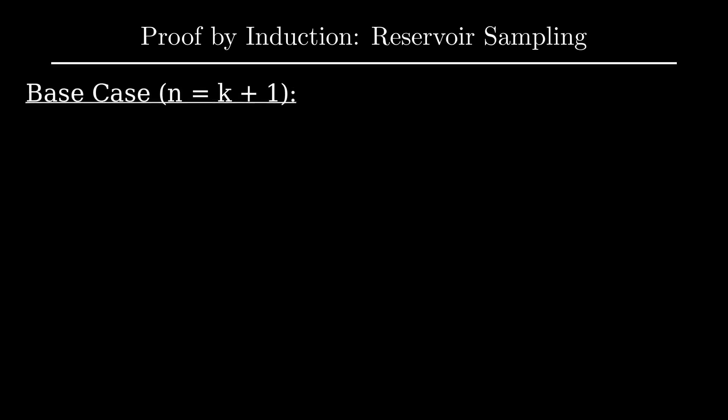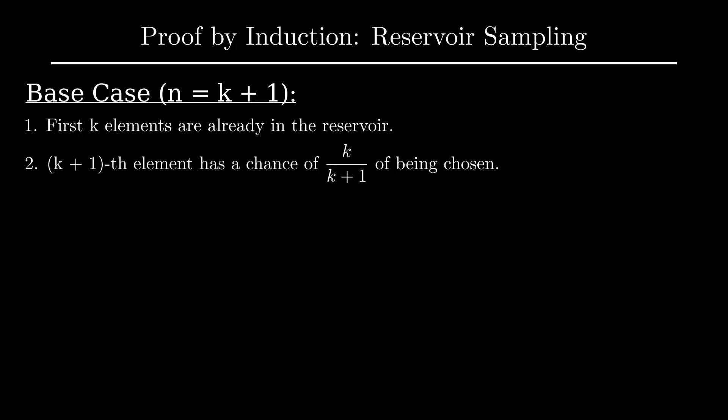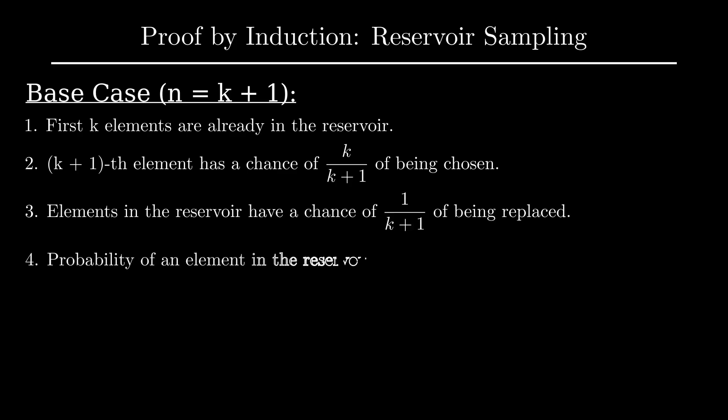The proof works by induction on n greater than k, so our base case is n equals k plus 1. The induction hypothesis is that all elements in the reservoir have the same probability of being there as the nth element when this element is processed. First k elements are already in the reservoir. k plus 1 element has a chance of k divided by k plus 1 of being chosen. The probability to replace a particular element in the reservoir is 1 divided by k plus 1, meaning it has a probability of remaining of k divided by k plus 1. All k plus 1 elements have an equal chance of being in the reservoir.